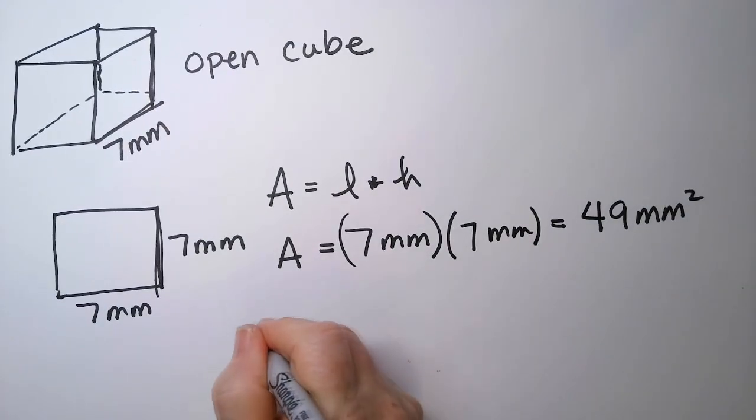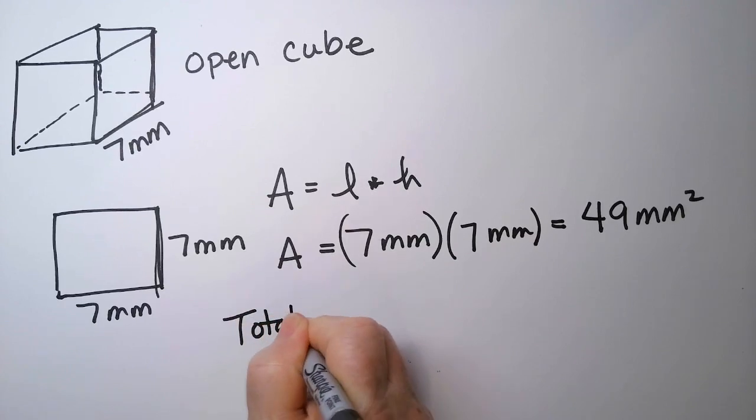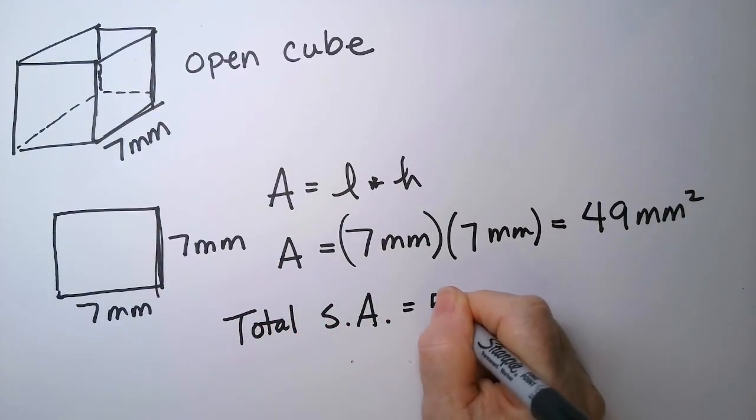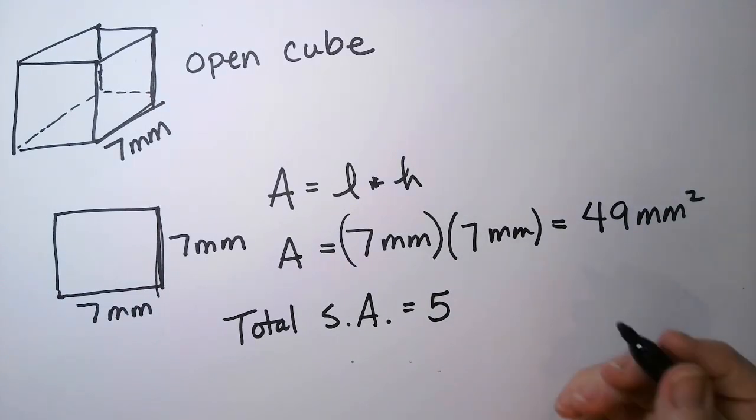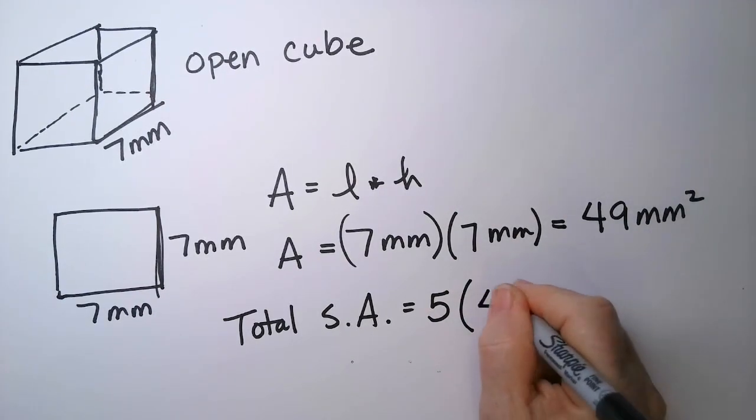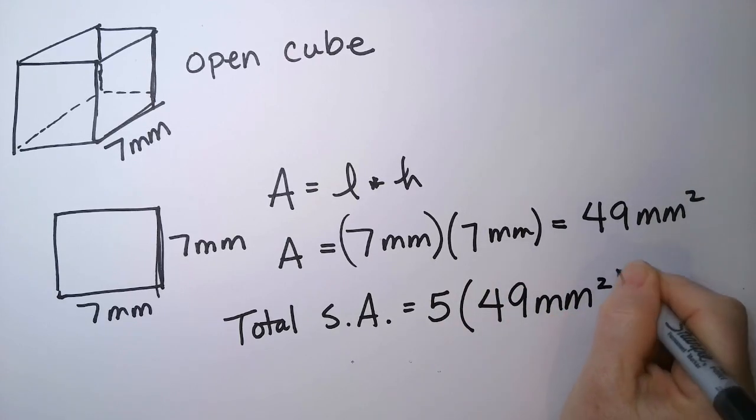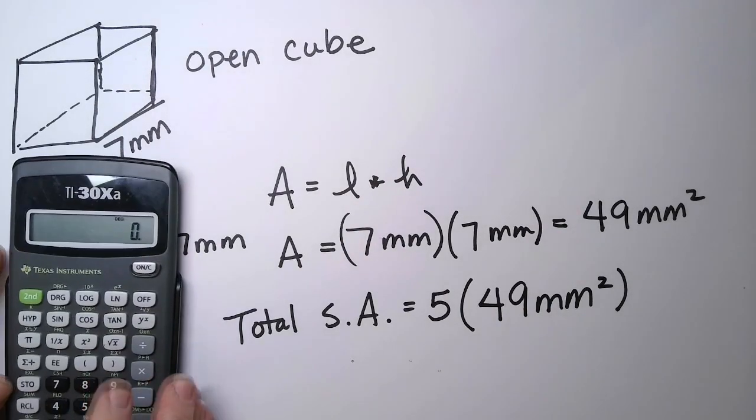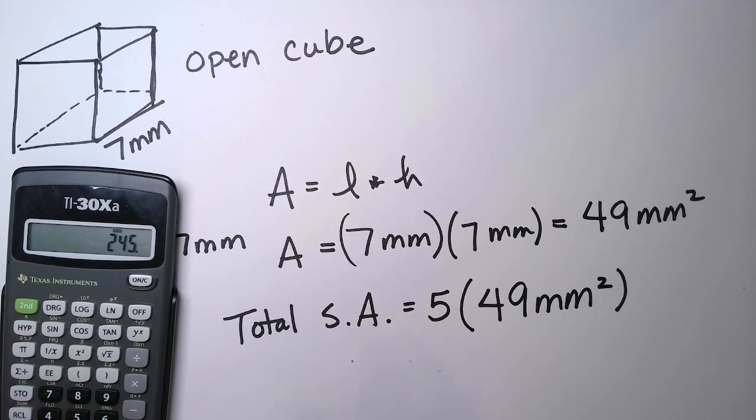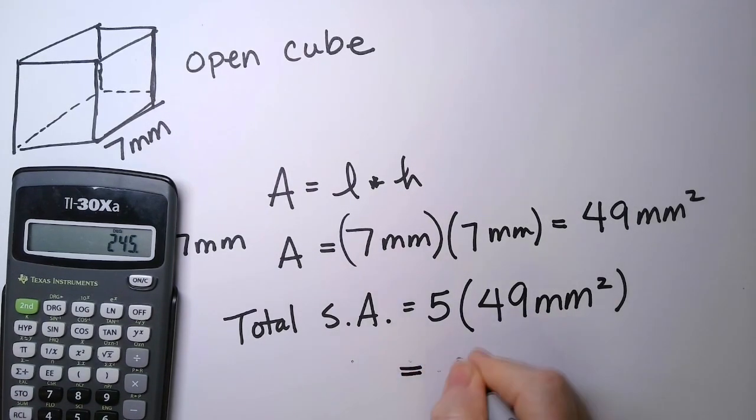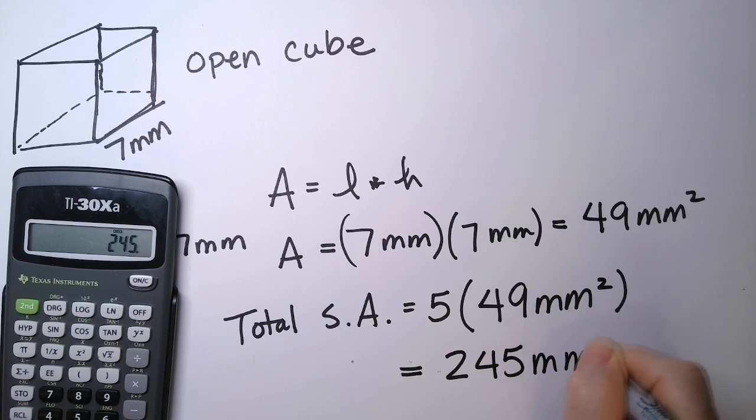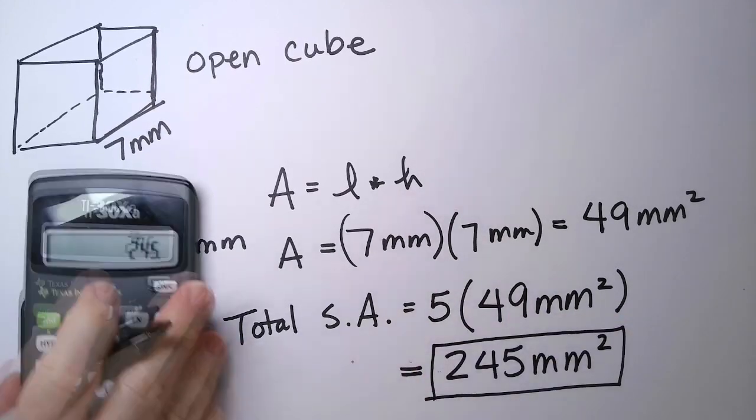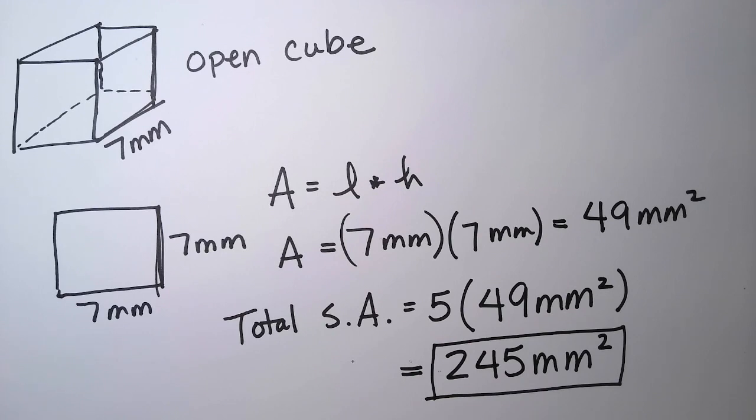And now I want the total surface area, but remember, we only have 5 sides this time, not 6, because it's an open cube. So we have 5 faces times 49, and then what you're going to do is you're going to grab a calculator and say 5 times 49, so I have 245 square millimeters. Can you see how you'd need less paint if you had one less face? And that's it. That's how you would calculate the surface area of a cube.